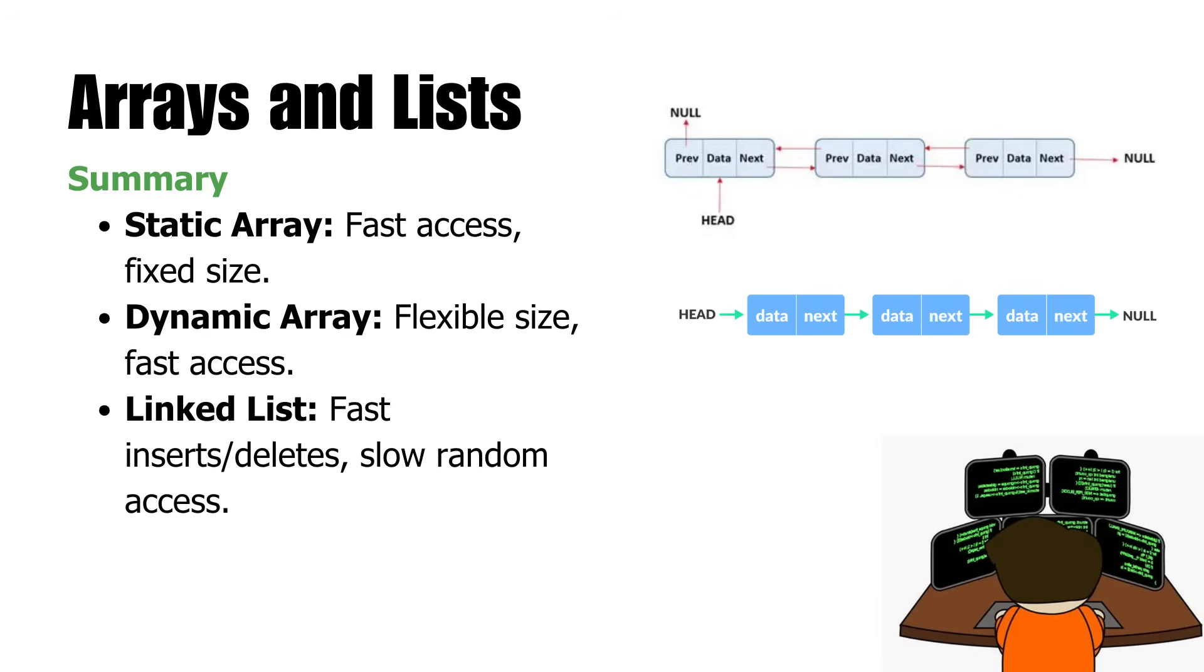In summary, we employ static arrays for fast access when the size is known, dynamic arrays for variable size with fast access, and linked lists for numerous inserts and deletes. Arrays are fast and efficient in space for lookups, while linked lists are suitable for frequently changing forms. Now, let's move forward to stacks and queues.